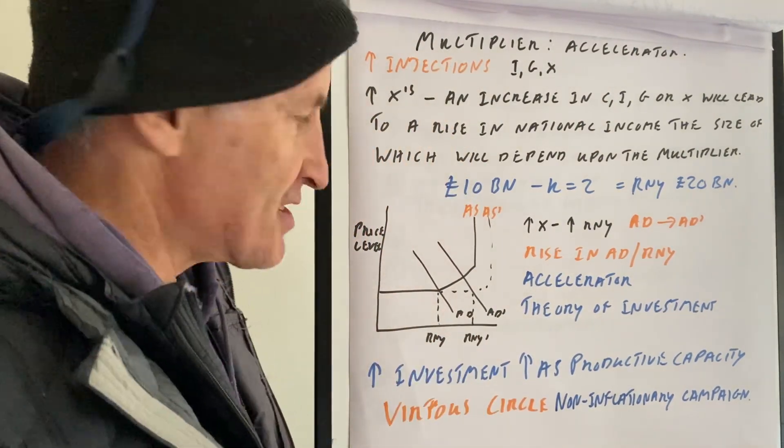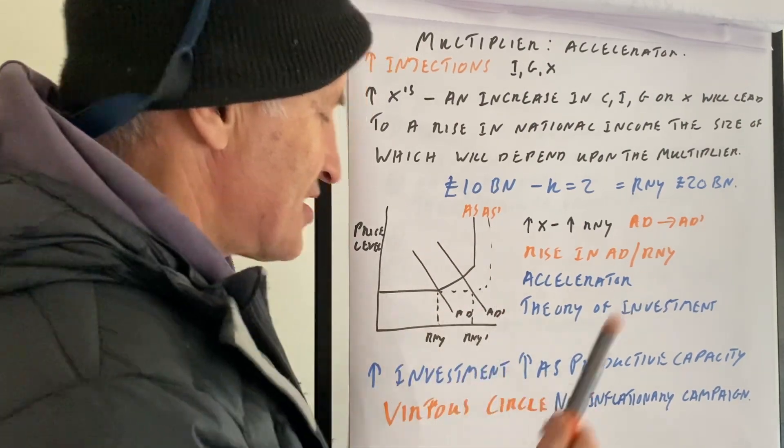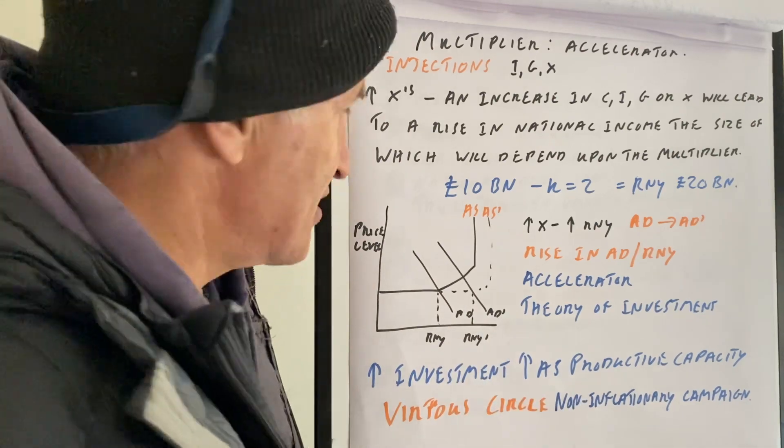But imagine also if we want to draw a diagram of this. So if we have a diagram on here, the initial effect will be a rise in AD. So we draw a rise in AD.